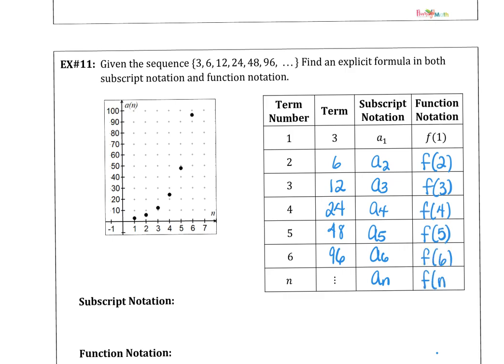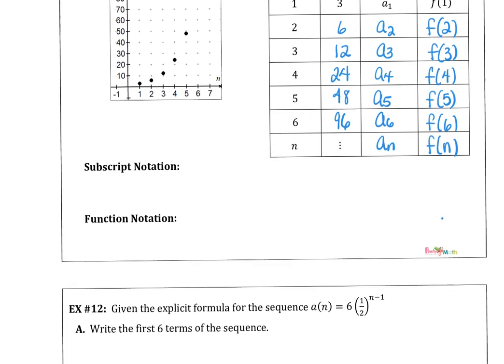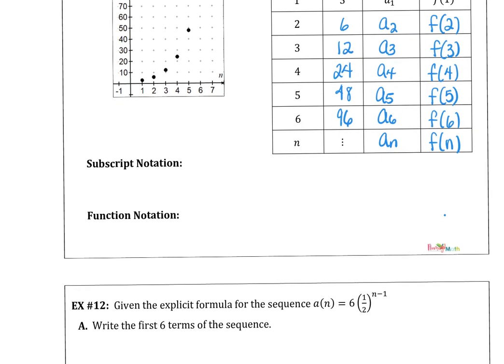Either one will be acceptable in our course. So writing the subscript notation, a sub n is 3 times 2 to the n minus 1. And the f sub n is 3 times 2 to the n minus 1.